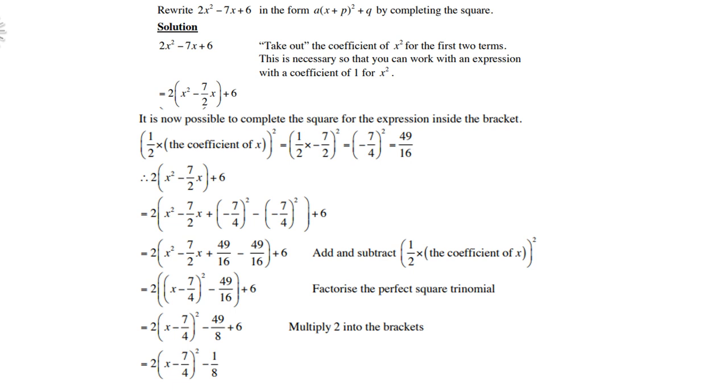Once you've done that, the first three terms will form a perfect square, namely x-7/4, all squared. And now we can add -49/16 with 6, and we get -81.